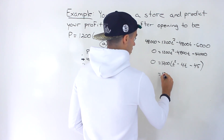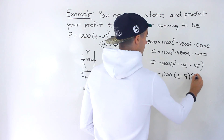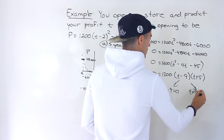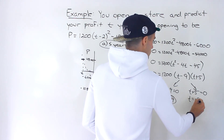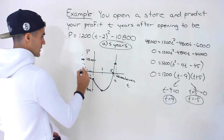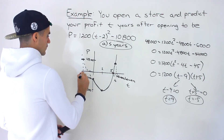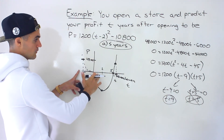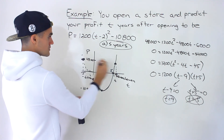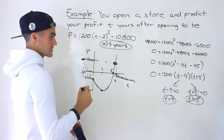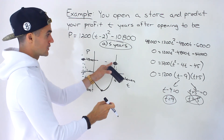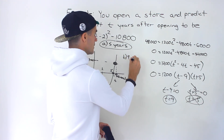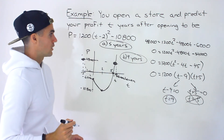This quadratic factors into (T minus 9)(T plus 5) equals 0. So T minus 9 equals 0 gives T equals 9, and T plus 5 equals 0 gives T equals negative 5. We ignore the negative 5 value. According to the word problem, 9 years is the solution for Part B — after 9 years, that is when you are going to make a profit of $48,000.